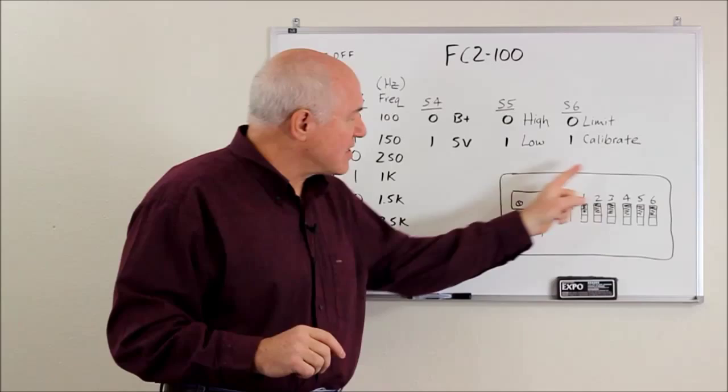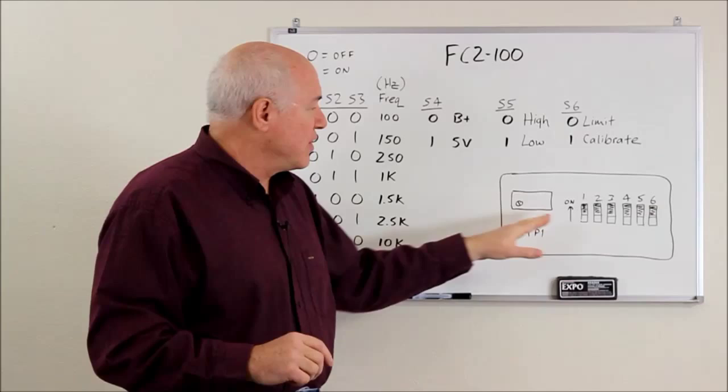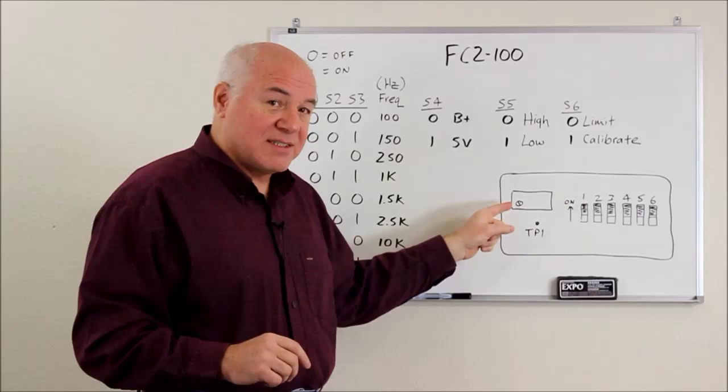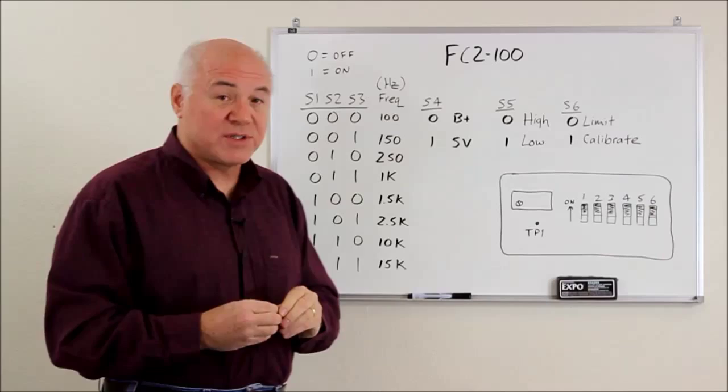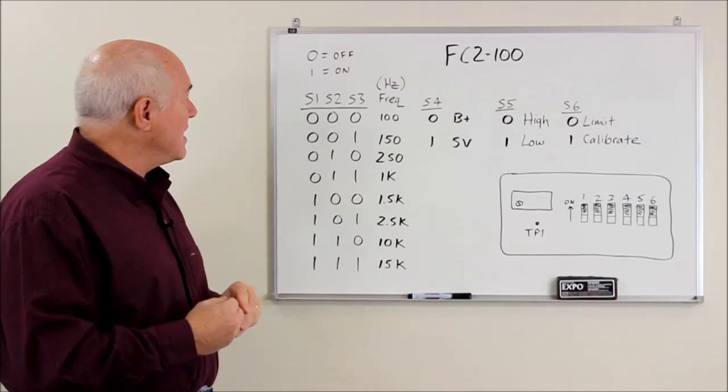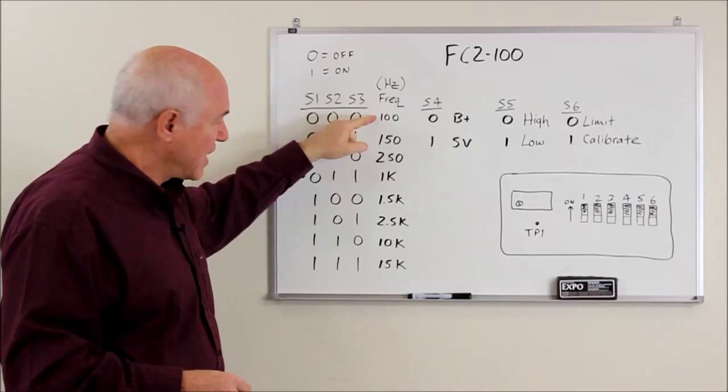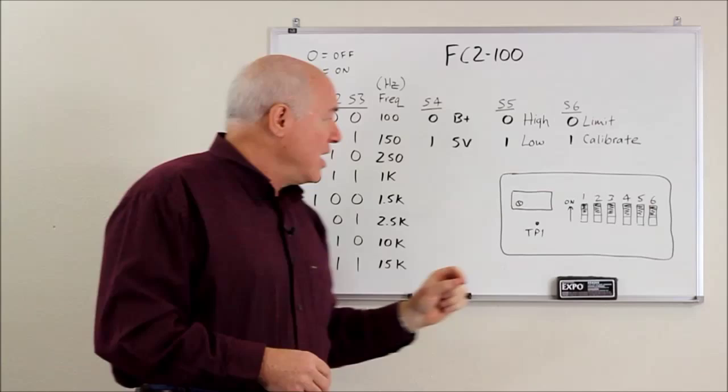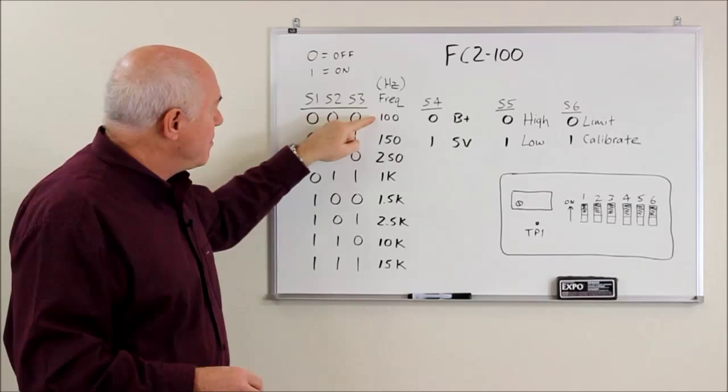Inside the device, there are dip switches labeled one through six that are used to configure the device. There's a single adjustment, a 20 turn potentiometer, and then there's a test point you can use to measure the voltage at that point with your digital voltmeter. So the basic idea is that there are all these frequency ranges going from 100 hertz full scale all the way up to 15 kilohertz. So these first three switches are just selected in this sort of simple binary combination to pick the frequency range.